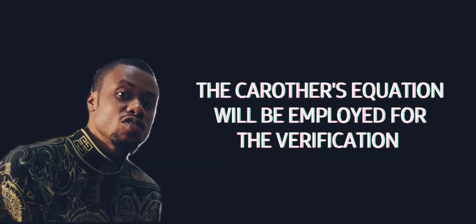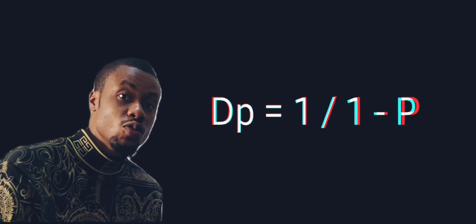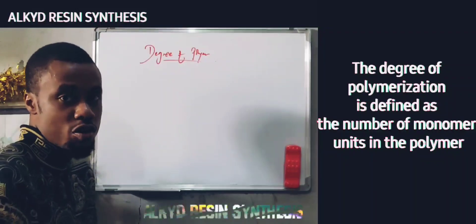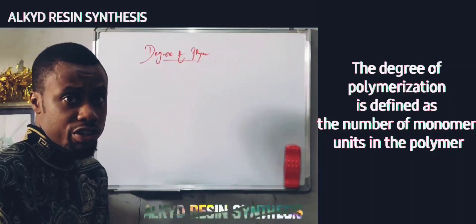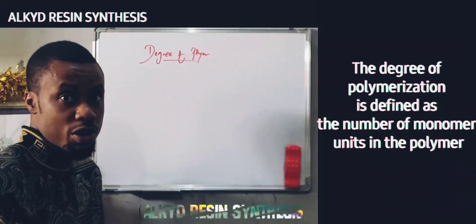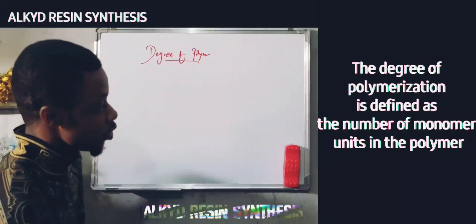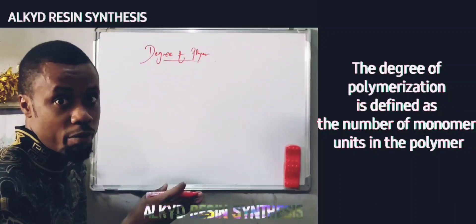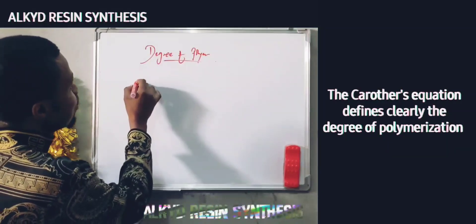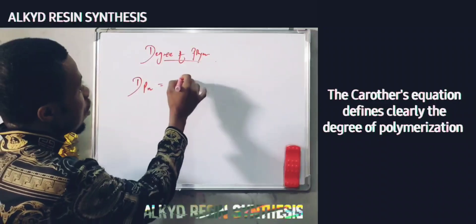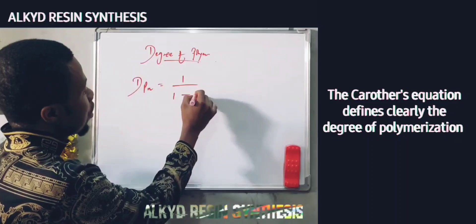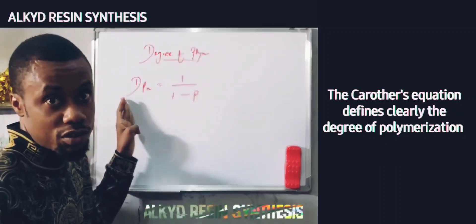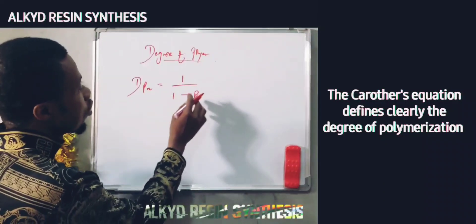We're going to compare it with the theoretical knowledge of the degree of polymerization and apply the formula to see that polymerization refers to the number of repeating units, or the number of monomers incorporated in the polymer chain. The number of structural units in the alkyd resin is the degree of polymerization. It is expressed as: DP = 1 over (1 minus P). That is the formula — if you'd like to know how it is derived, I can do a separate video on that.